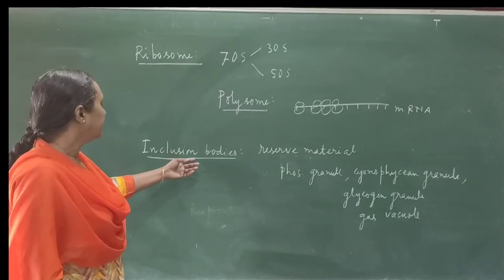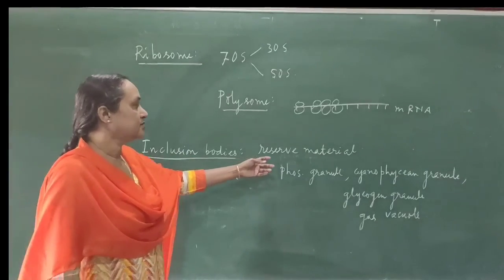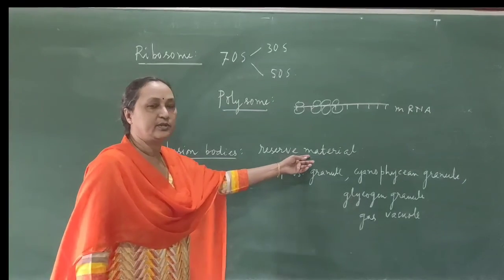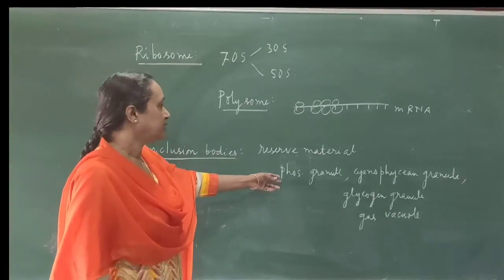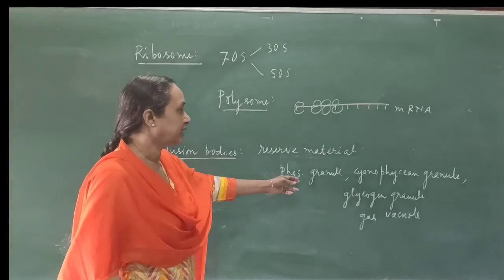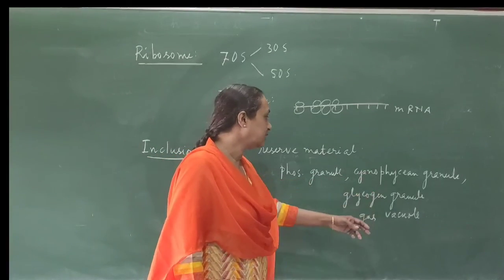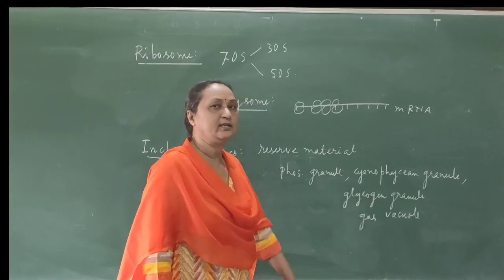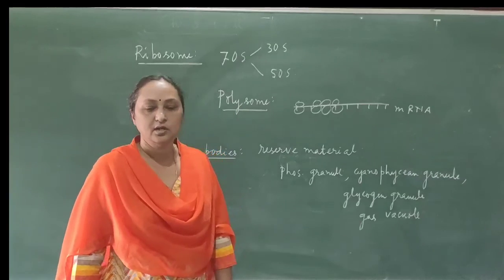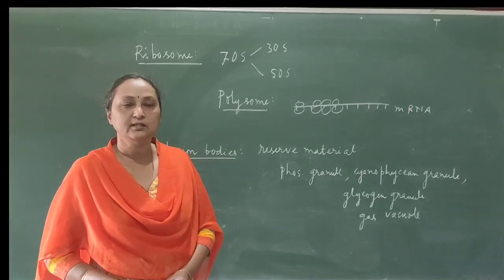There are also many inclusion bodies — these are reserve materials present in the cytoplasm, for example phosphate granules, cyanophycean granules, glycogen granules, and gas vacuoles. This is all about bacterial cells.